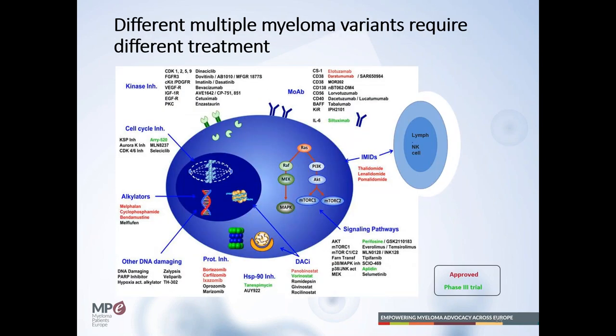We do have many new agents available. We have the IMIDs — the immunomodulatory agents: thalidomide, lenalidomide, and pomalidomide. We have proteasome inhibitors: bortezomib, carfilzomib, and ixazomib. Monoclonal antibodies, already implemented in standard treatments: daratumumab and elotuzumab. And alkylators that are still very important in myeloma treatment: melphalan and cyclophosphamide.